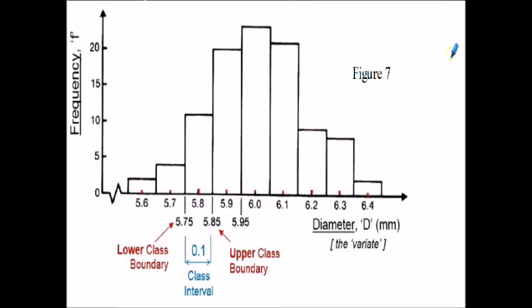Just returning to figure 7 for a moment - the ball bearing sample and the histogram we generated from discrete data. For the category 5.75 to 5.85, we have the lower class boundary as 5.75 millimeters and the upper class boundary of 5.85 millimeters. Moving to the next category between 5.85 and 5.95, the 5.85 value becomes the lower class boundary and 5.95 millimeters becomes the upper class boundary. In this case all the class intervals are 0.1 millimeters, and that's why we could plot frequency on the vertical axis.